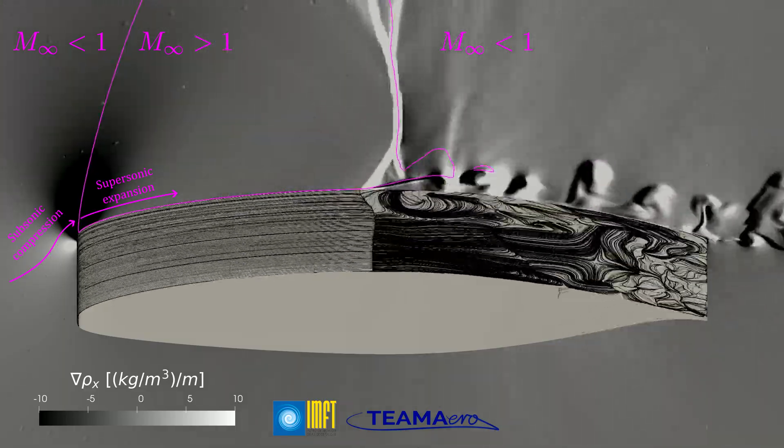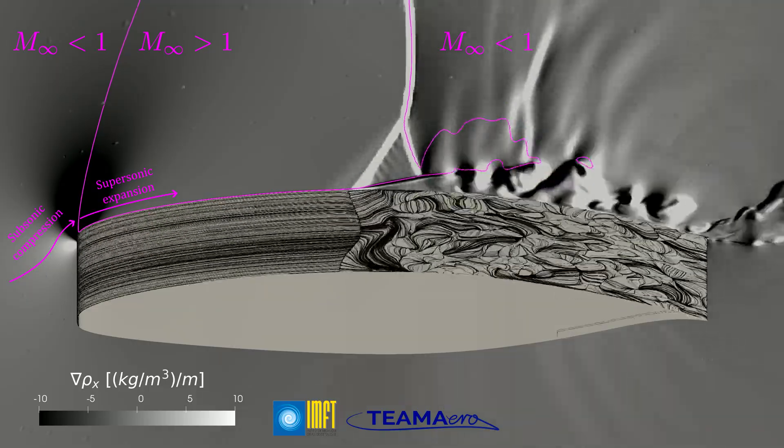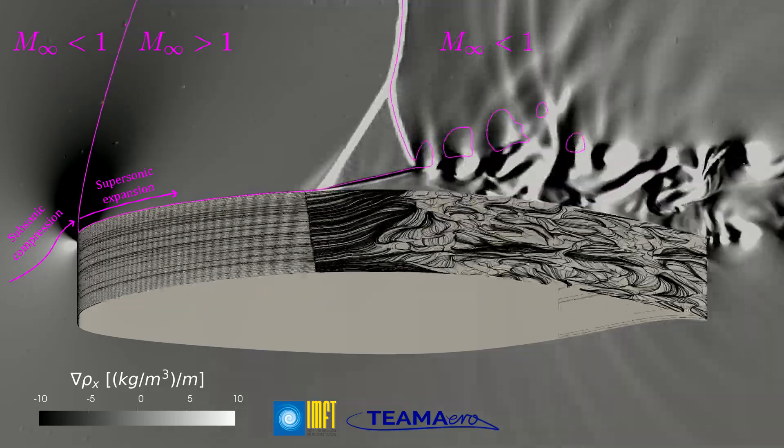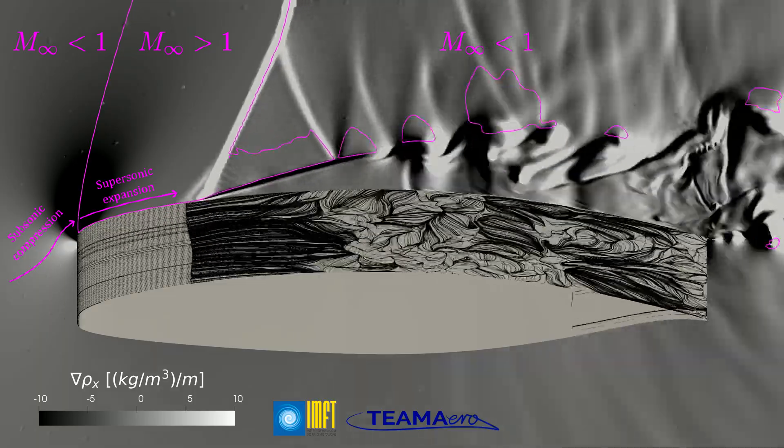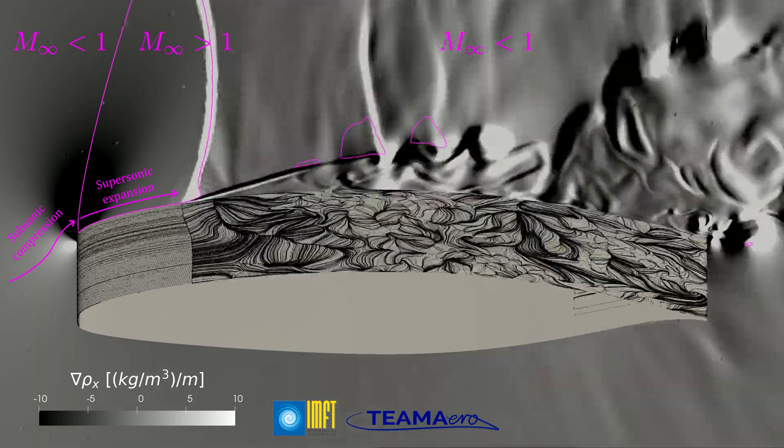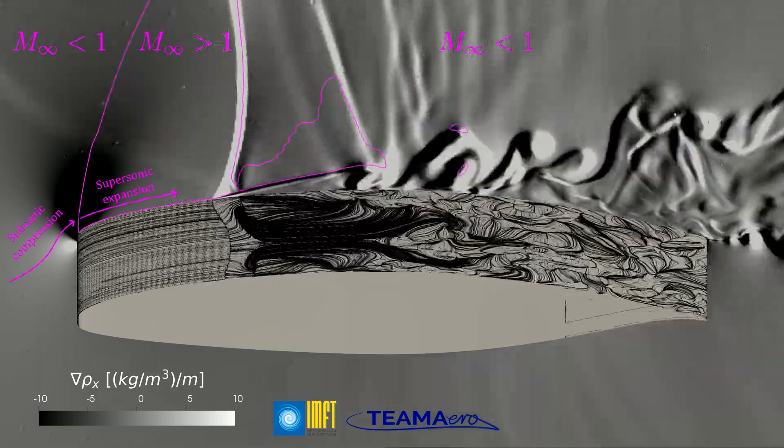Once it reaches supersonic conditions, this is Mach 1 at the sonic line, the flow is further accelerated thanks to a supersonic expansion. This acceleration is sustained until the flow encounters the shock wave and the speed goes back to subsonic conditions.